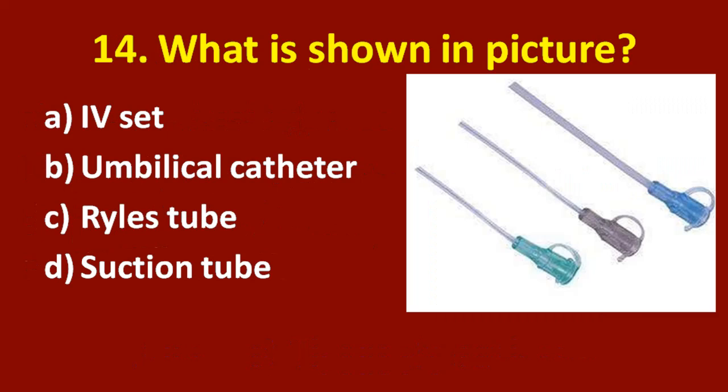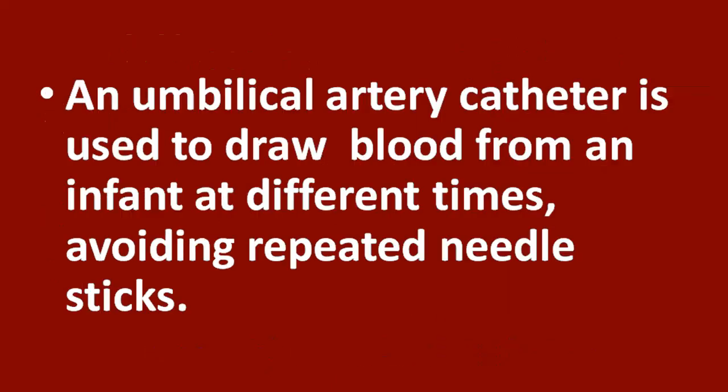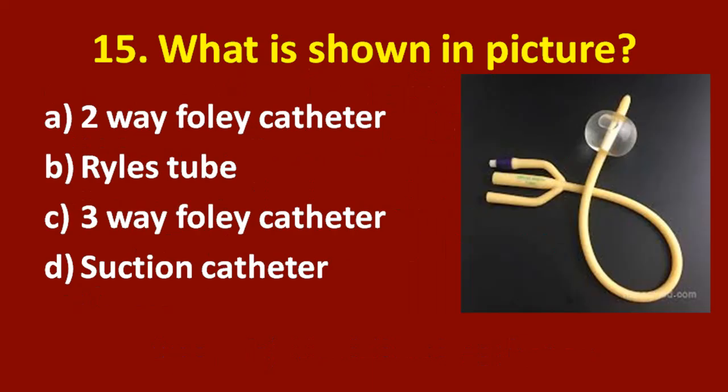Fourteenth question: what is shown in the picture? Option A: IV set. Option B: umbilical catheter. Option C: Ryle's tube. Option D: suction tube. The correct answer is option B, umbilical catheter. An umbilical artery catheter is used to draw blood from an infant at different times, avoiding repeated needle sticks.